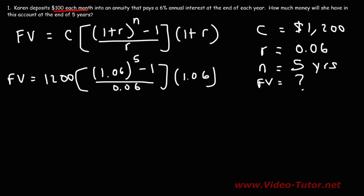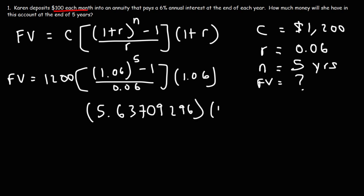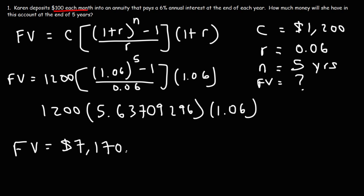Working on the inside first: 1.06 raised to the fifth power is 1.338225578. Subtract 1 and divide by 0.06, and you get 5.63709296. Multiply that by 1.06 and by 1200. So the future value of this account is $7,170.38.